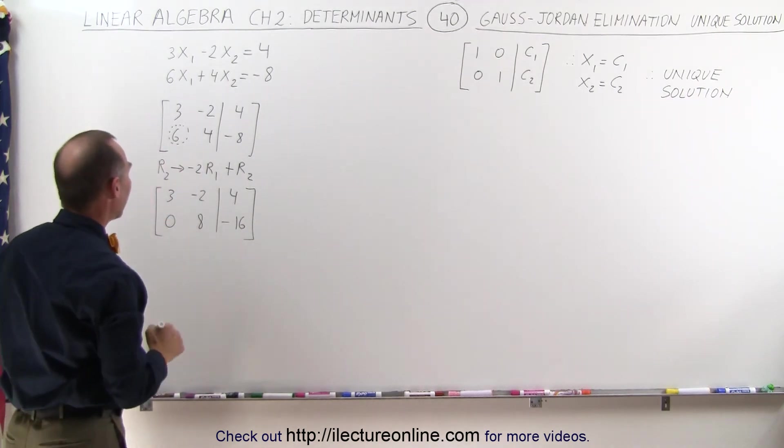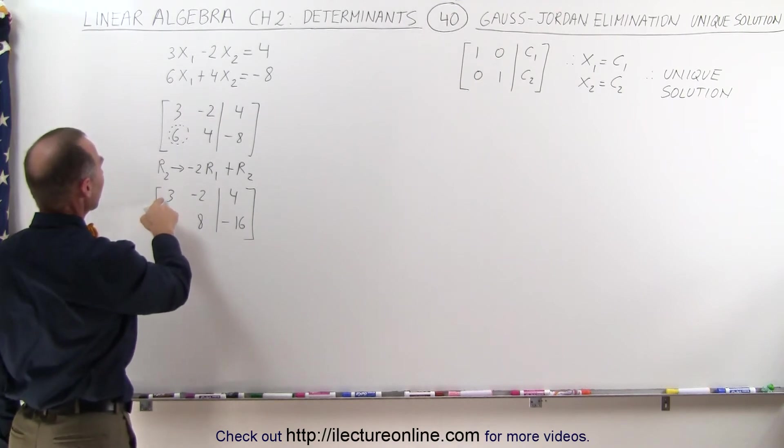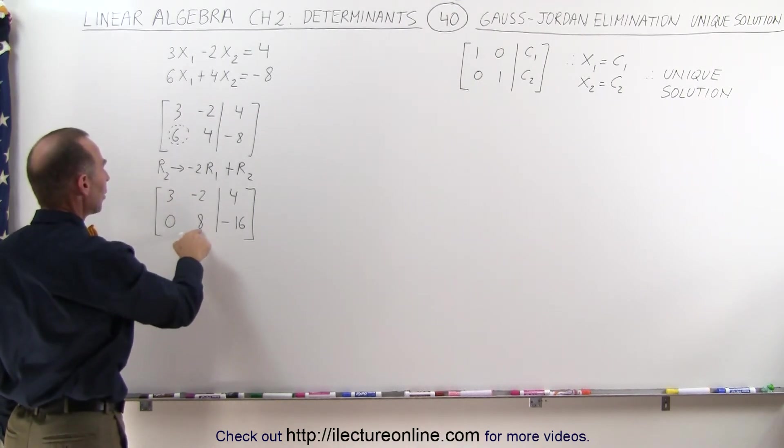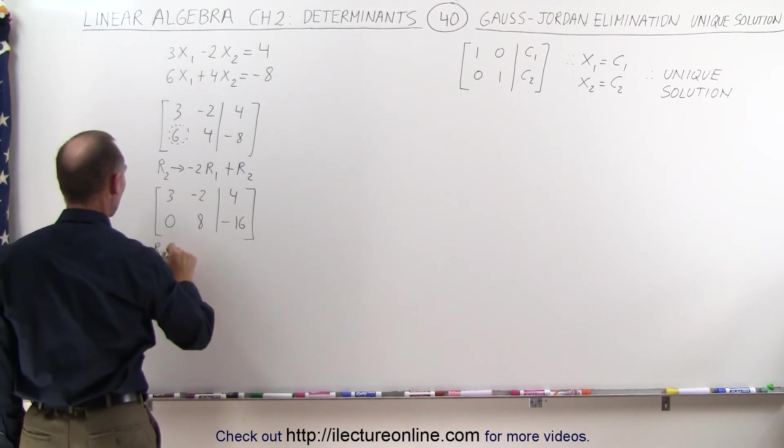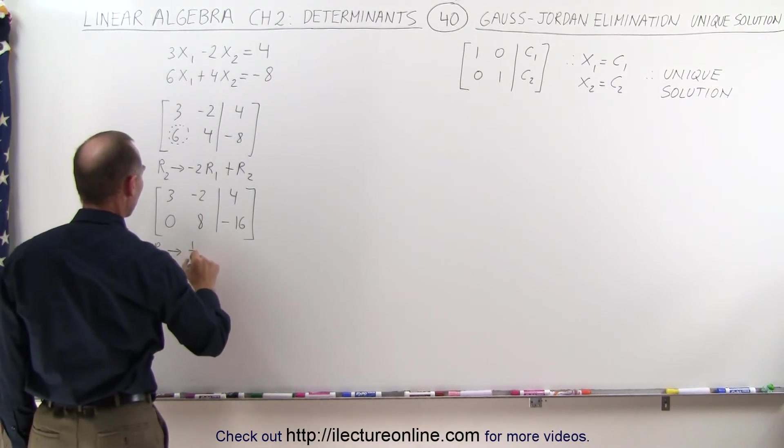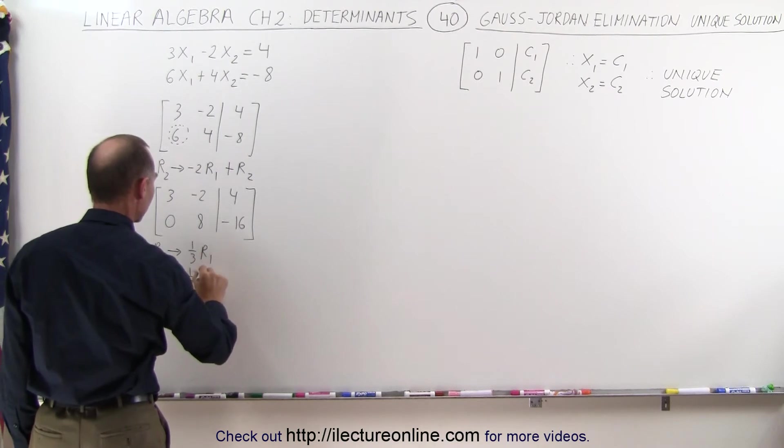Now we can go ahead and turn this into a 1, and turn this into 1. So what we're going to do is take the first row and change it to 1/3 the first row, and we're going to take the second row and change it to 1/8 the second row.